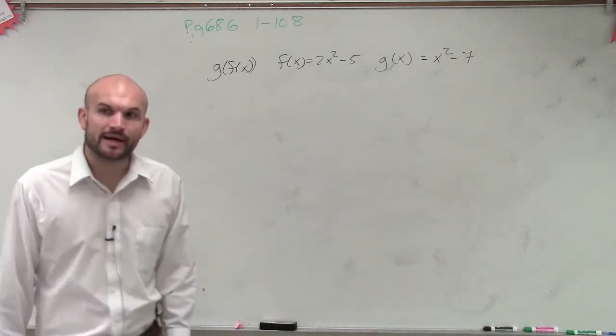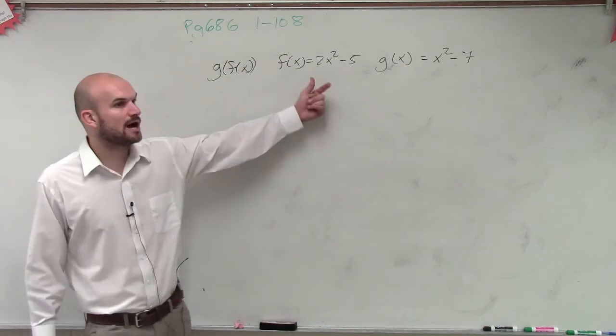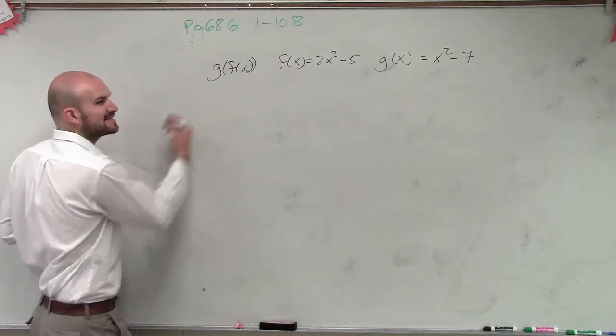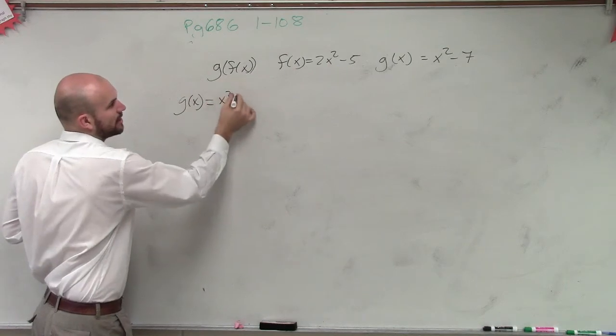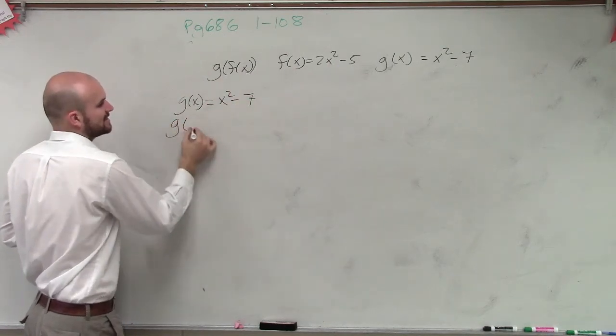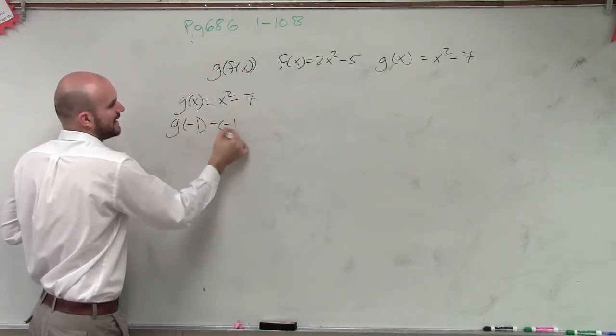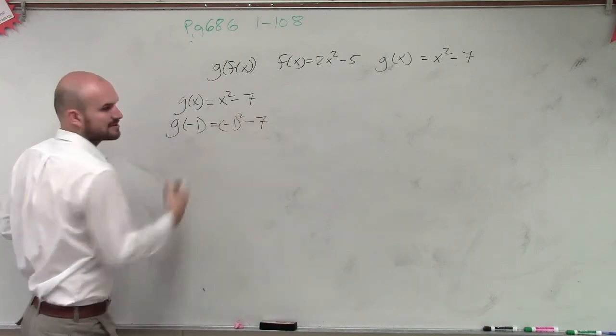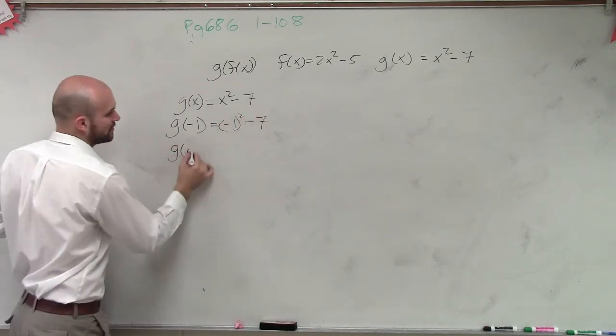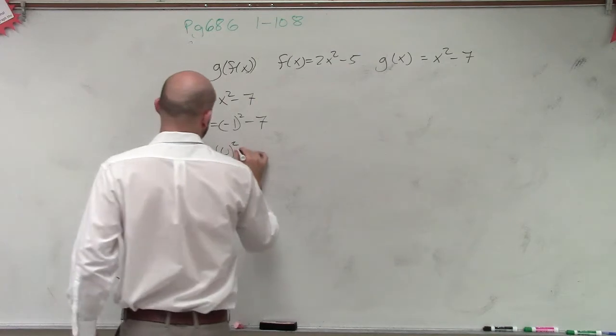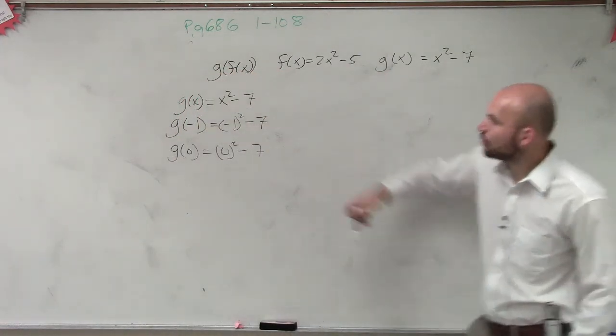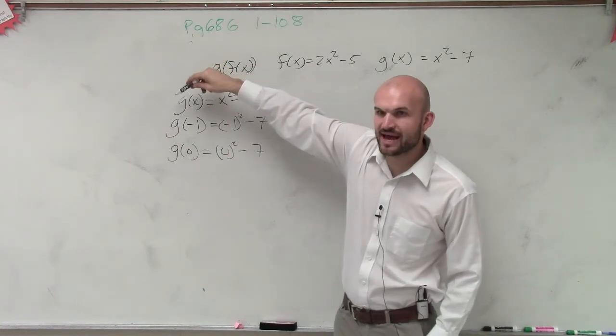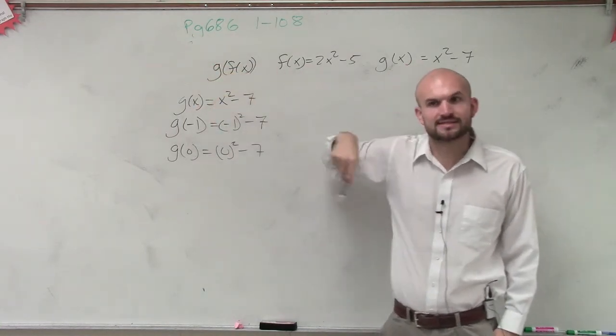So what we're going to be doing for this type of problem is now, remember if we say, what does exactly g of x mean? Remember, g of x is equal to x squared minus 7. So if I said g of negative 1, you put in negative 1 in for x. If I say g of 0, you put in 0 in for x. It doesn't matter what I'm plugging in. Whatever you put into those parentheses instead of x, that's what you plug into the formula instead of x.